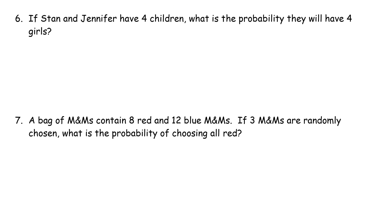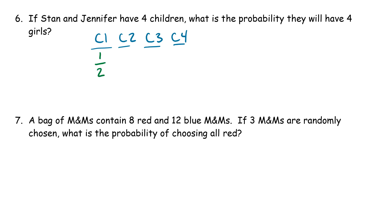Number 6: if Stan and Jennifer have four children, what is the probability they will have four girls? For each of the four children, the probability of being a girl is 1 out of 2. Since we want all of them to be girls, we multiply: 1/2 × 1/2 × 1/2 × 1/2, which gives us 1 out of 16, or approximately 0.06.